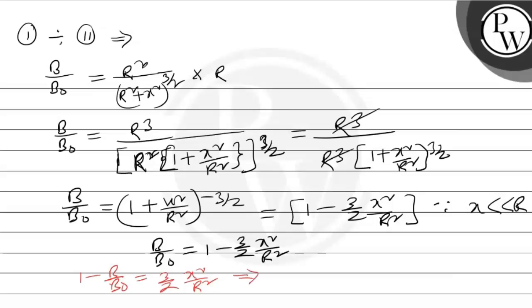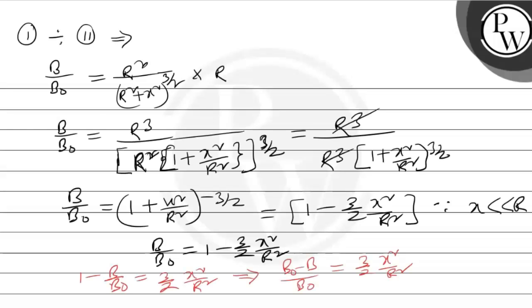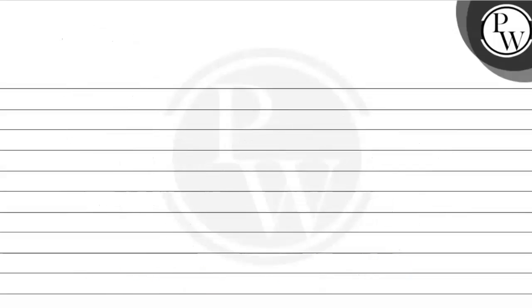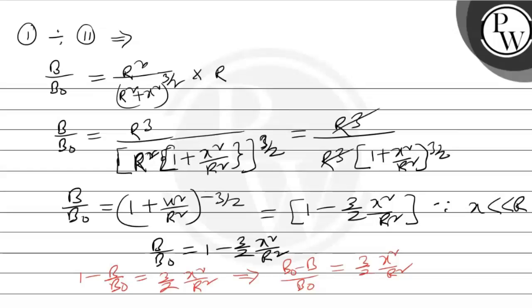Rearranging, we write (B₀ − B)/B₀, which is called the fractional change, equal to (3/2)(x²/R²). So the fractional change ΔB/B equals (3/2)(x²/R²).